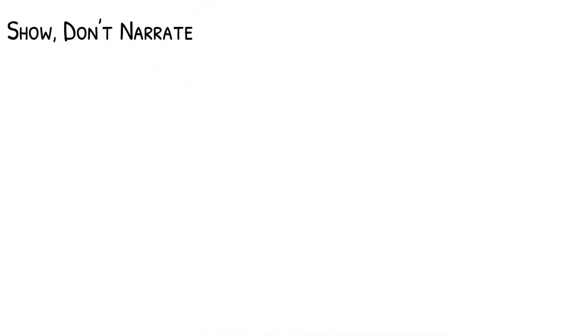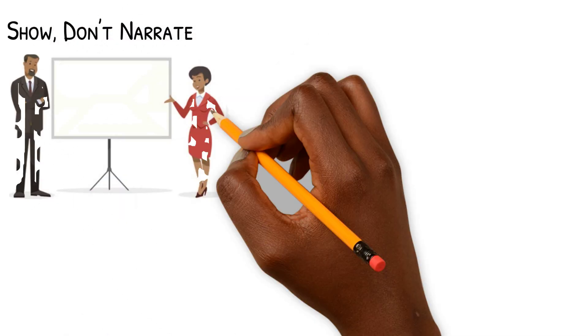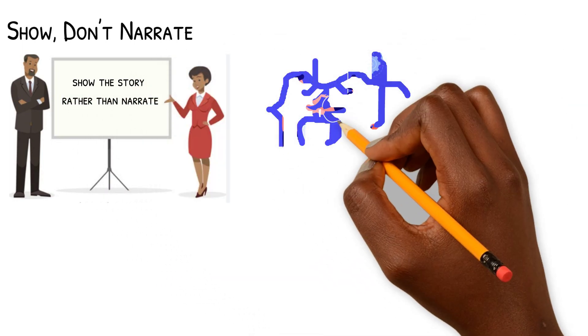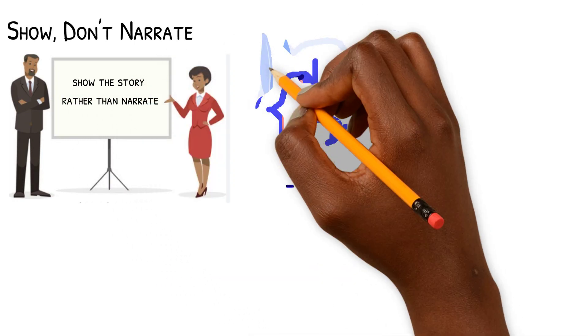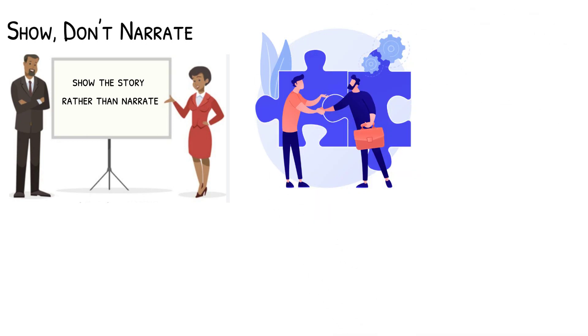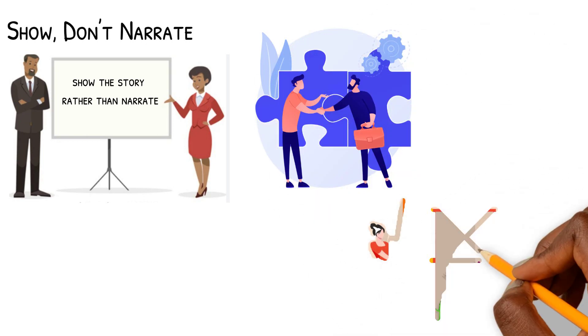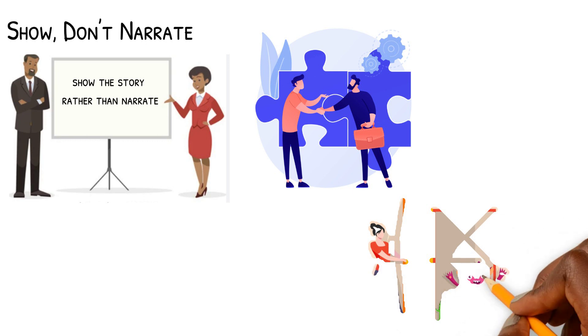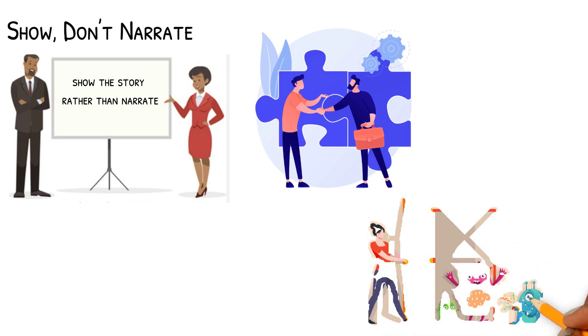Show, don't narrate. Whenever possible, show the story rather than narrate. For instance, if you're selling a revolutionary product that has the potential to change a person's life, create a character and situations that demonstrate the change that owning your product would make. By creating descriptive settings and characters, you won't need additional narration.